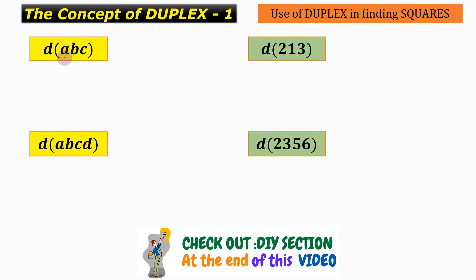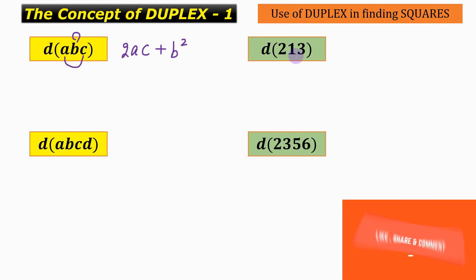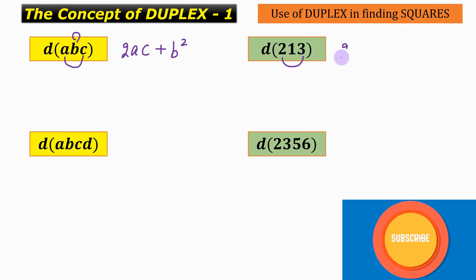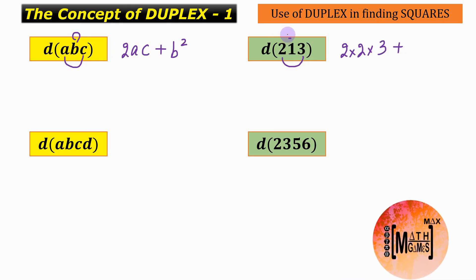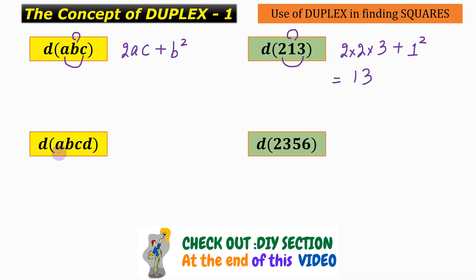The duplex of a three-digit number abc is the duplex of a and c, that is 2ac, plus b squared. Hence the duplex of the number 2 1 3 will be 2 into 2 into 3 plus the square of the middle term, that is 1 squared, and this comes out to be equals to 13.